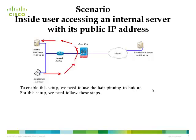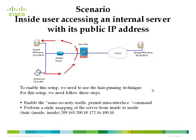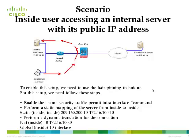To enable this, follow these steps: enable the same-security-traffic permit intra-interface command; perform a static mapping of the server from inside to inside; and perform a dynamic translation for the connection. Note that in the diagram, data traffic is shown in only one direction, but communication from the server back to the client also happens in the same direction.